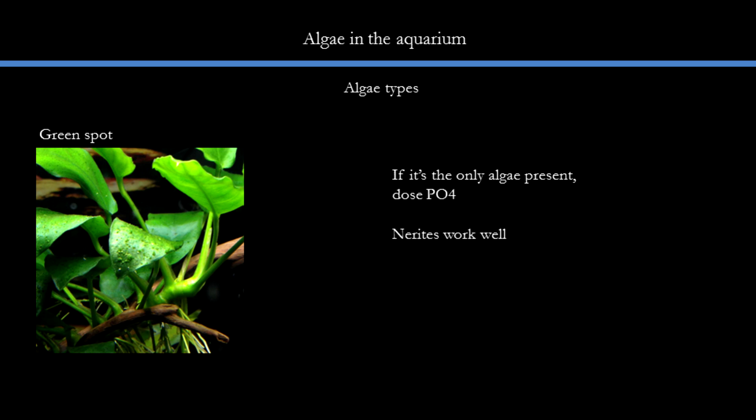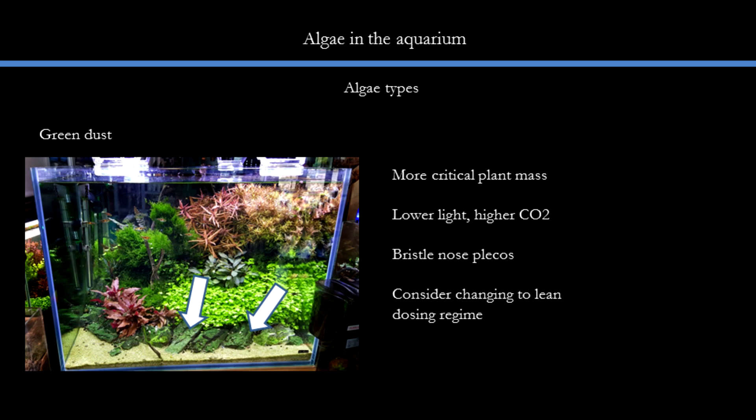Green spot algae has a very specific treatment — if most of your tank is clean but this is prevalent, try increasing your phosphate levels. Lastly, we have green dust algae, which is kind of the bane of the experienced aquarist. In many tanks where plants are growing well, the glass or rocks are constantly plagued by green dust. There are a couple of ways to go about it: use the Tom Barr method — introduce algae eaters, use bristlenose plecos, lower your light and raise your CO2, so overall raise the growth parameters but lower the light. If this doesn't work, I would argue that one can consider changing the entire nutrient dosing regime instead of very elevated EI levels — perhaps try something like the ADA system. I will elaborate more on the lean dosing approach in another video.